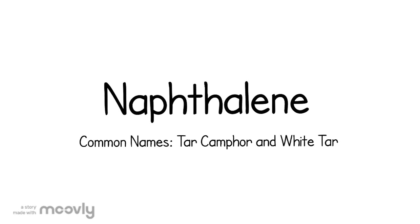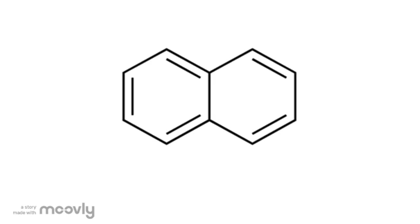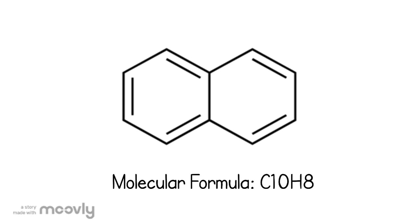Naphthalene, also known as tar camphor and white tar, is the simplest polycyclic aromatic hydrocarbon. The structure of this molecule consists of two benzene rings fused together, and the molecular formula for this compound is C10H8.